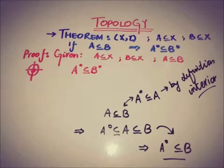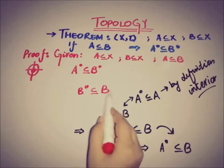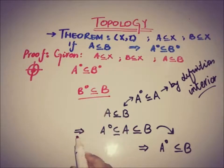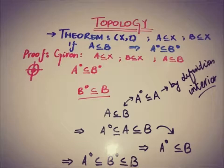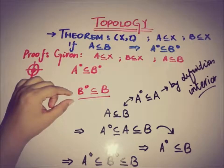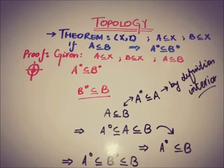Now we can also apply this definition for the set B. Since interior of B is a subset of B, and interior of A is a subset of B, we can say that interior of A must be contained in the largest open subset of B. If A is contained in the largest subset of B, then interior of A is also contained in a smaller open subset of B.